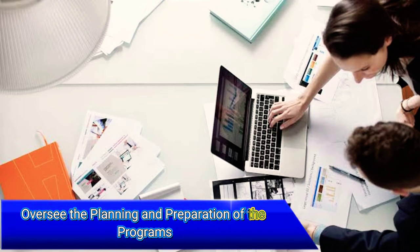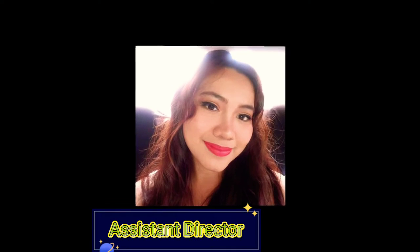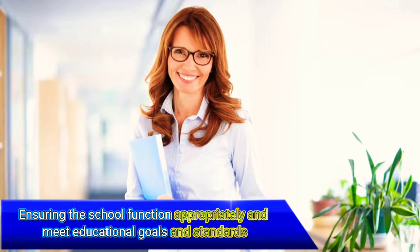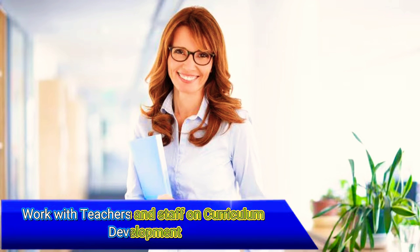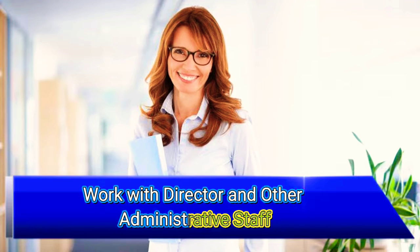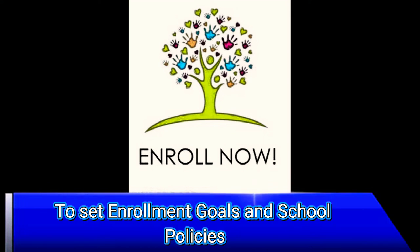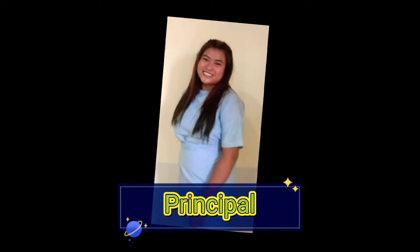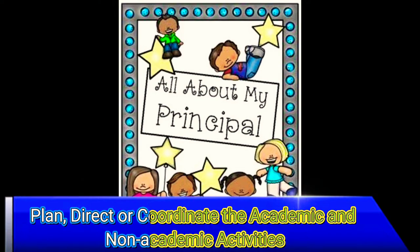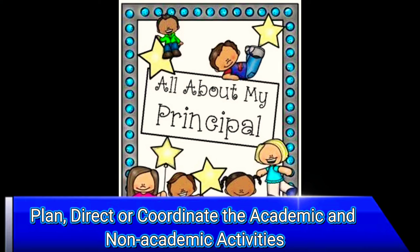The director oversees the planning and preparation of programs. An assistant director ensures the school functions appropriately and meets educational goals and standards. Works with teachers and staff on curriculum development, and works with the director and administrative staff to set enrollment goals and school policies. Plans, directs, or coordinates academic and non-academic activities.